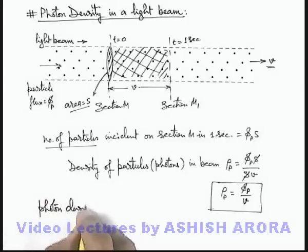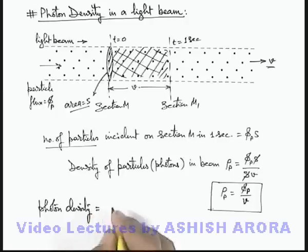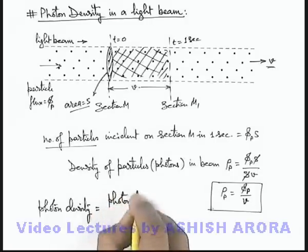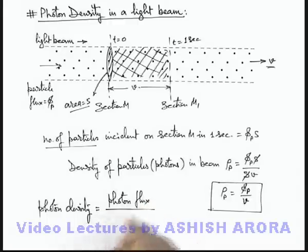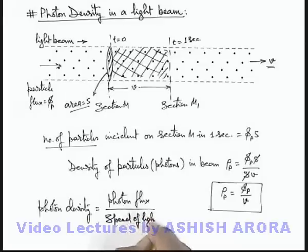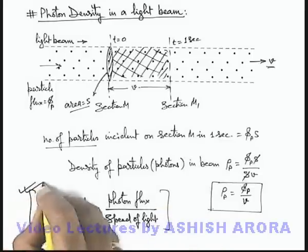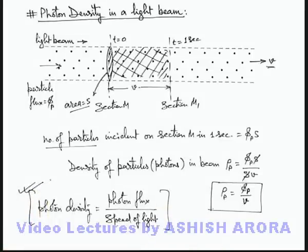So you can always write: photon density times velocity is equal to photon flux at a point, divided by speed of light in the media in which we are calculating the photon density. So be careful about this concept by which we can calculate photon density in various types of light beams.